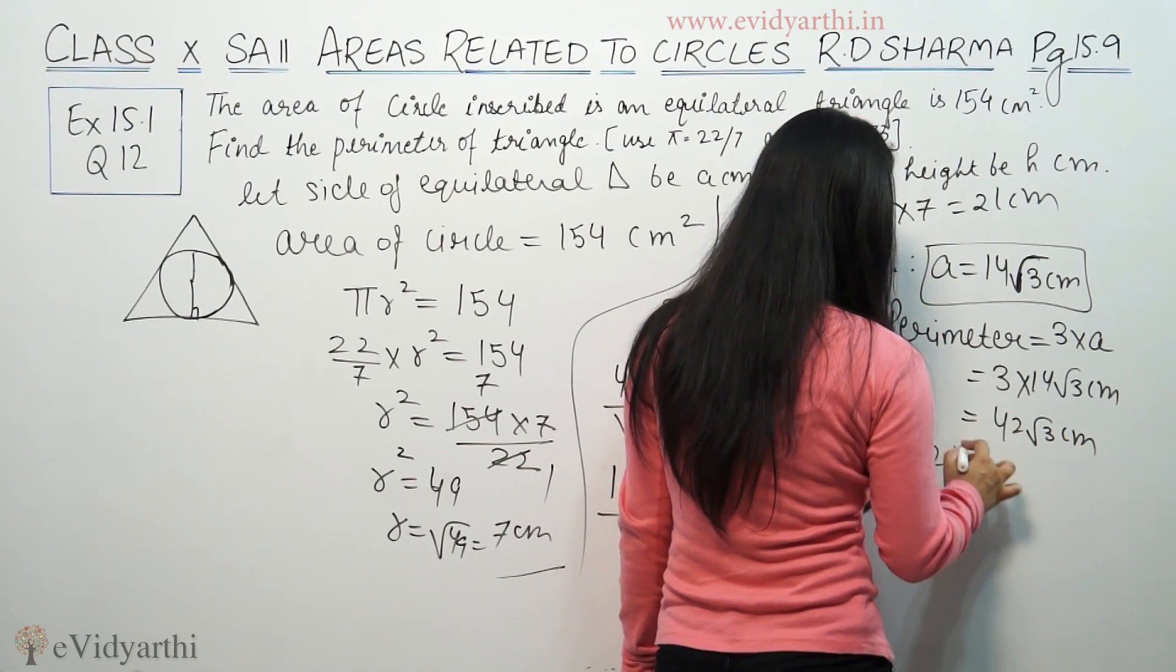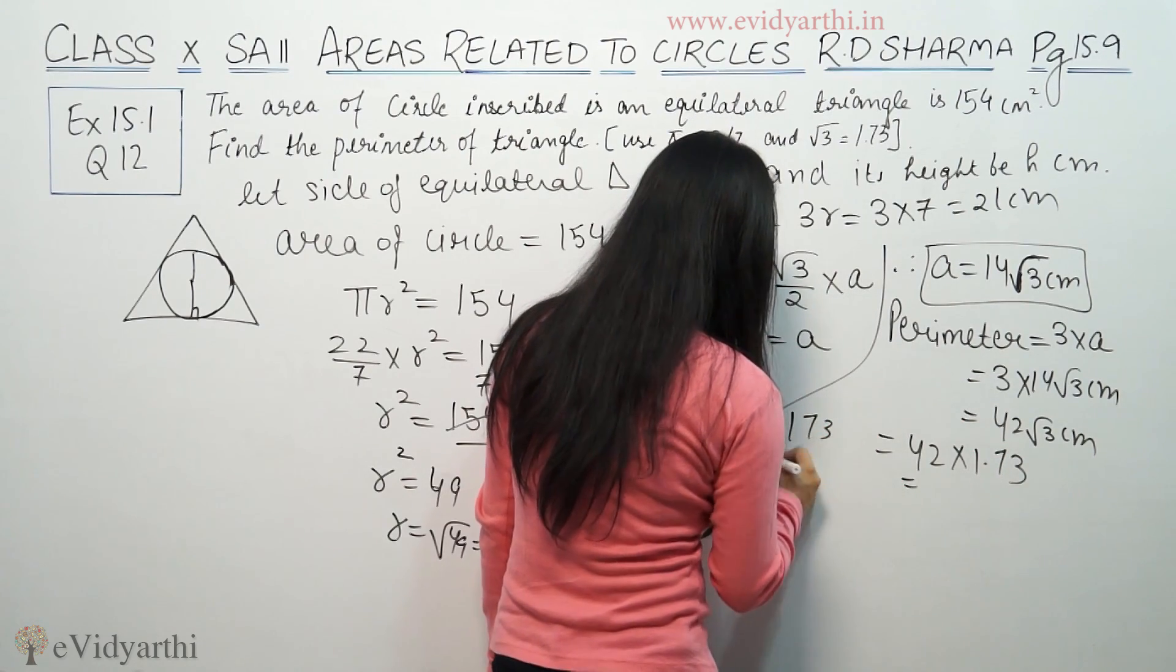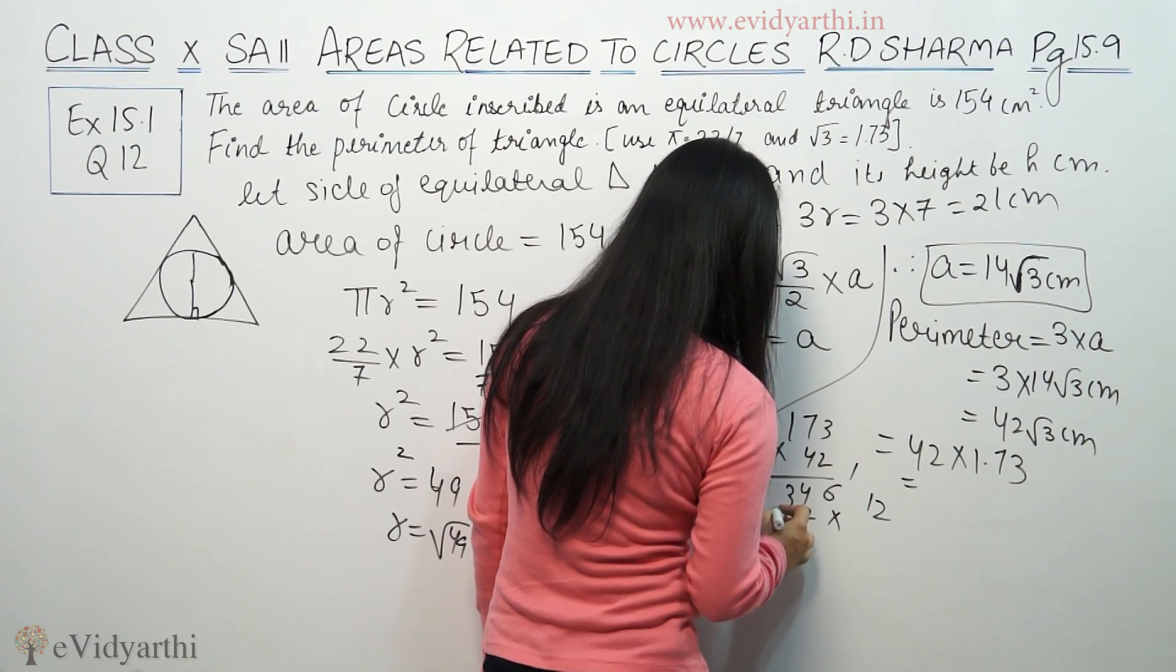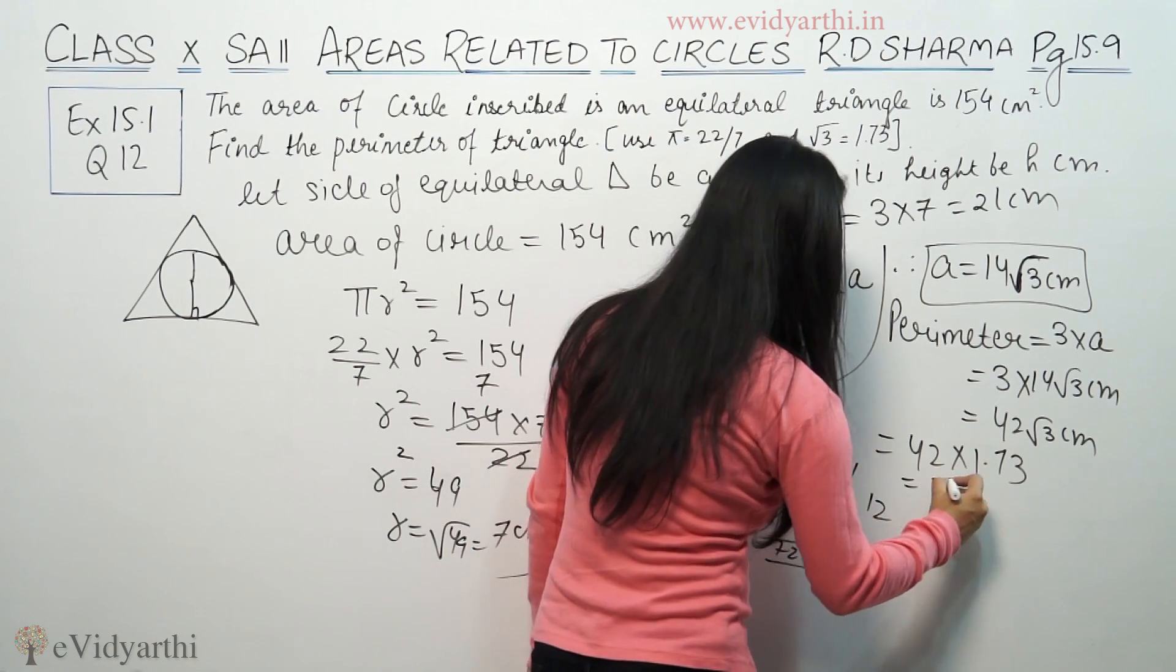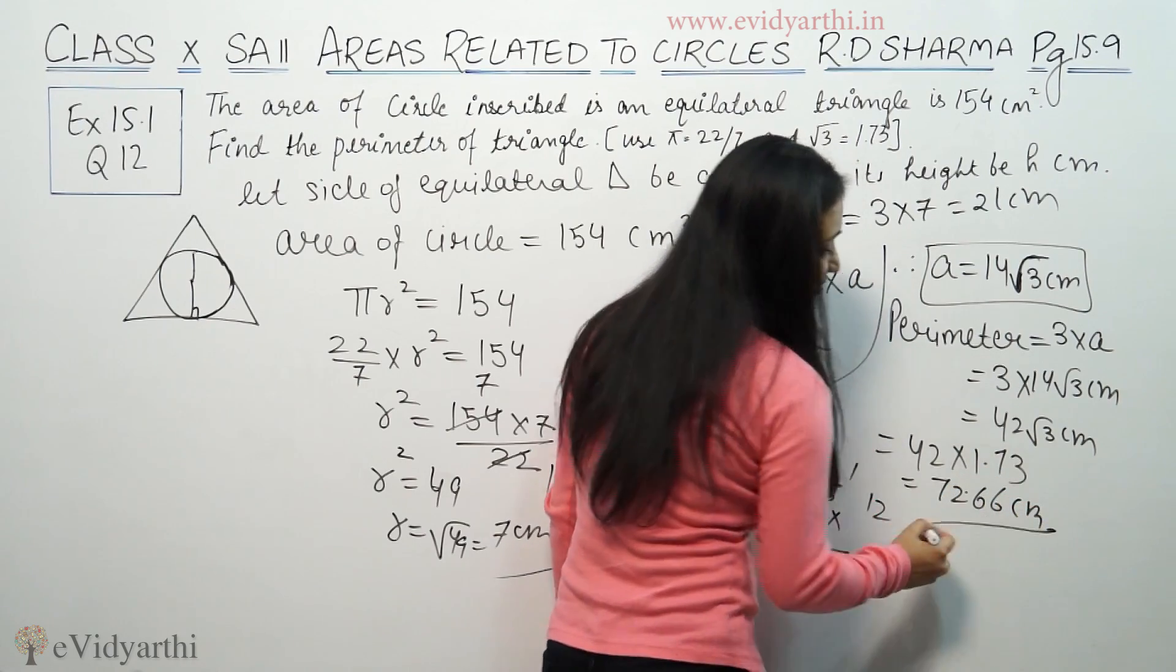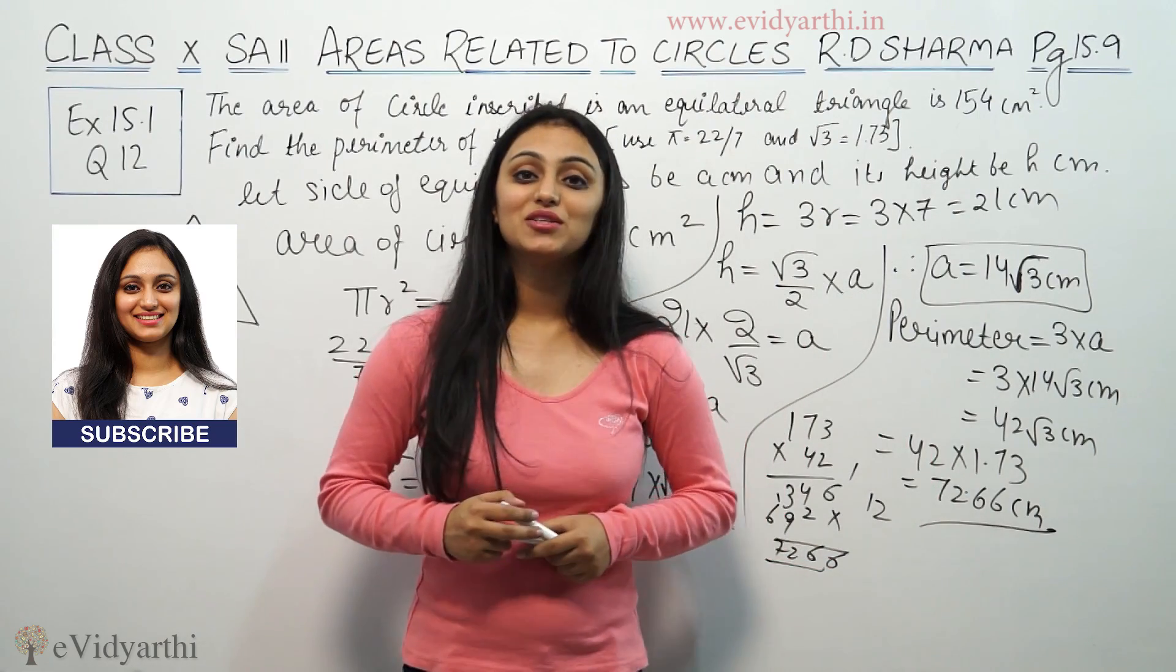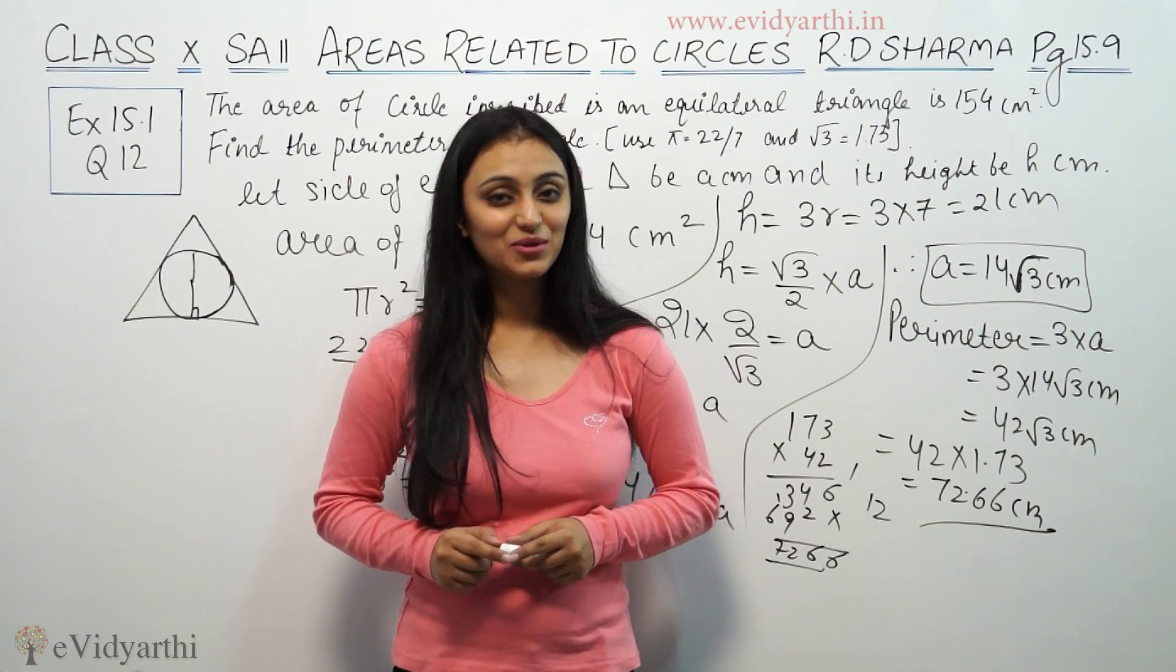Root 3's value is 1.73, so 1.73 times 42 equals 72.66 cm. This is the perimeter of the equilateral triangle. This was question 12 from RD Sharma. Watch the next video for more questions. Goodbye.